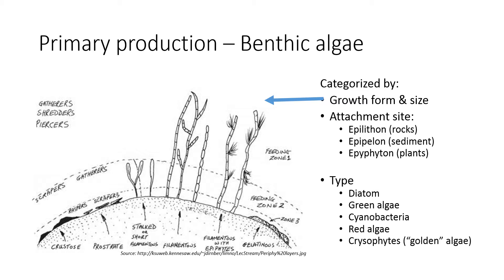So first I wanted to talk about primary production and benthic algae. You can really categorize algae based on their growth forms. This figure shows you the different growth forms of algae, from crustose and prostrate algae to stalked algae, longer filamentous algae, and gelatinous algae. You can see they've also delineated where different species or different feeding guilds of invertebrates and fish are going to be feeding — scrapers and gatherers up here, raspers and scrapers down here.